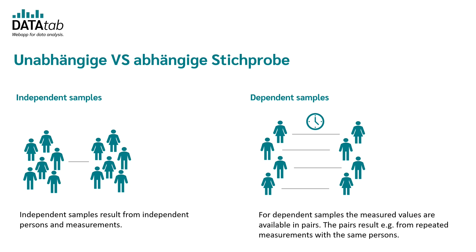For dependent samples, the measured values are available in pairs. The pairs result, for example, from repeated measurements with the same person — meaning this person is the same person measured twice. This video is about the independent t-test, so we consider independent samples.